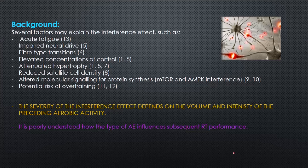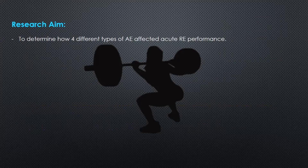All of these factors together may partly explain the interference effect, but the severity depends on the volume and intensity of the preceding aerobic activity. Surprisingly, it is poorly understood how the type of aerobic exercise influences subsequent resistance training performance. The present study asked: how do four different types of aerobic exercise affect acute resistance exercise performance?